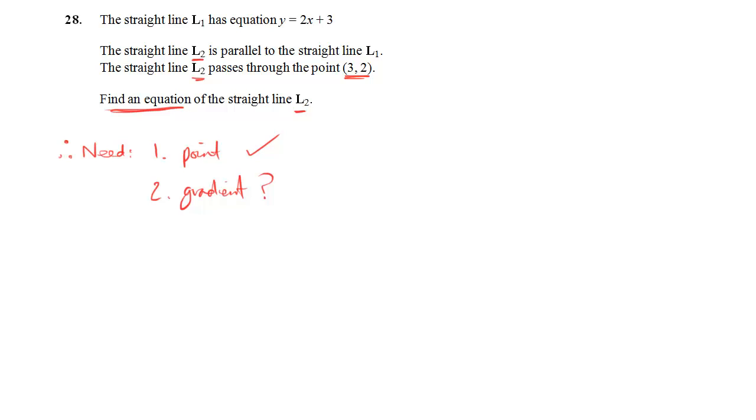So let's look at the other fact that we know about our line. L2 is parallel to the line L1. And L1 is that one there, and that has a gradient of 2. So if it's parallel to a gradient of 2, then it itself has a gradient of 2. So now we have all the information that we need. We've got a point and a gradient.